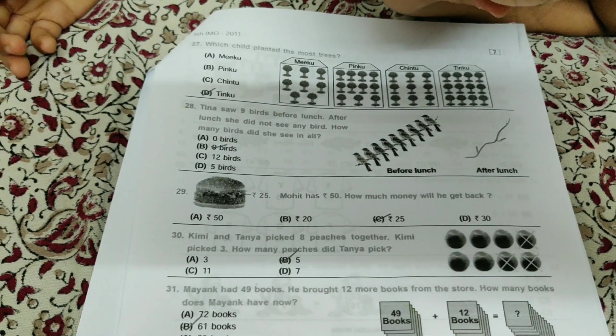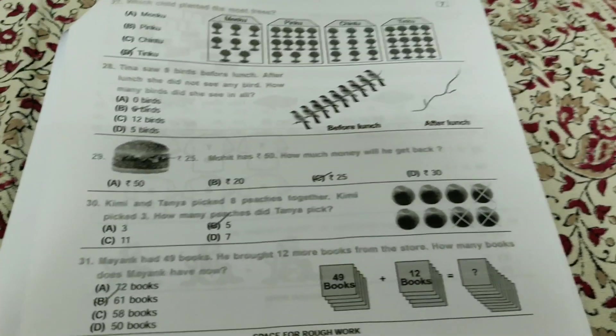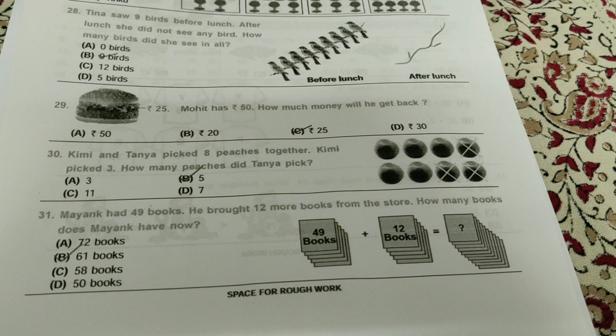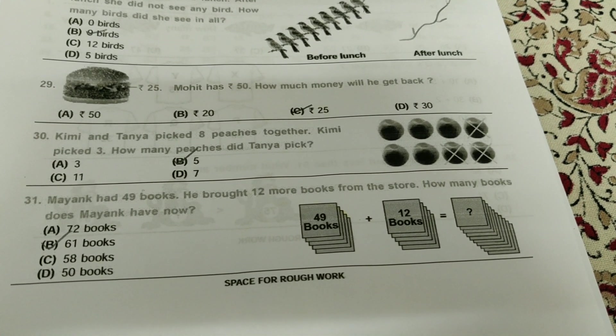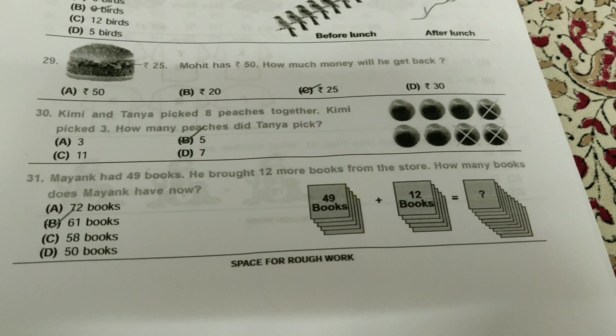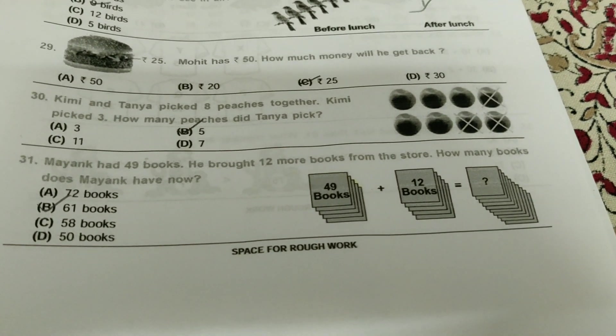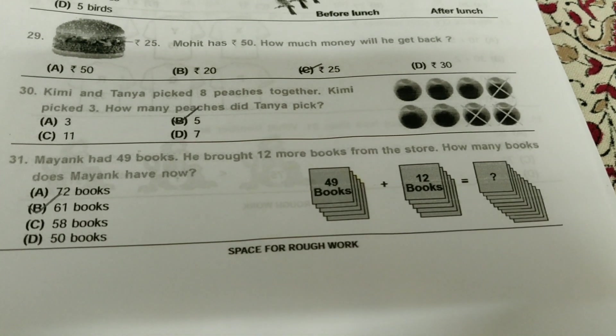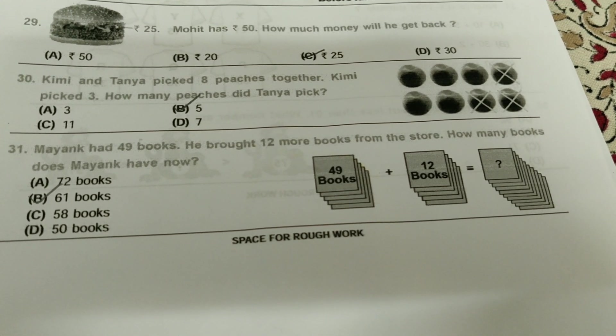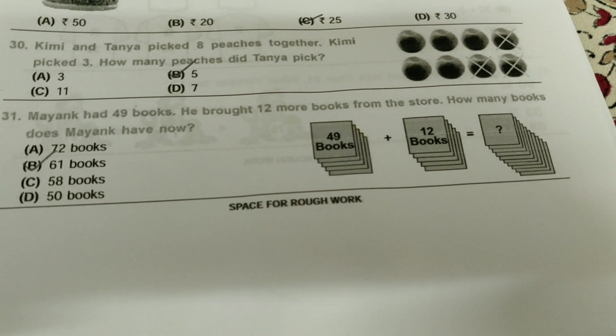A burger costs 25 rupees. Mohit has 50 rupees. How much money will he get back? 25 rupees. Kimmy and Tanya picked 8 peaches together. Kimmy picked 3. How many peaches did Tanya pick? Tanya picked 5 peaches. Mayank had 49 books. He bought 12 more books from the store. How many books does Mayank have now? Just add and you will get 61.